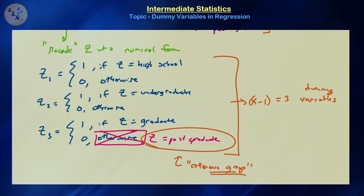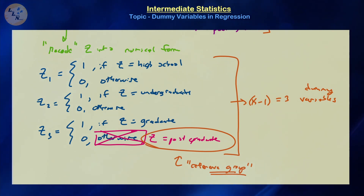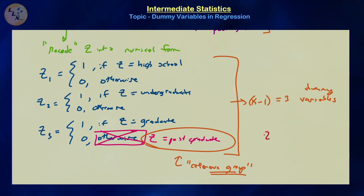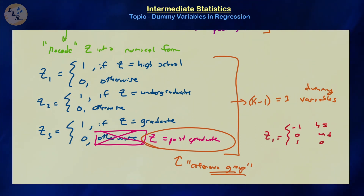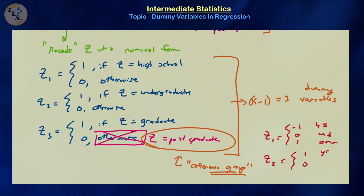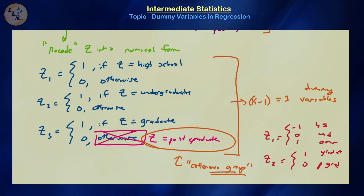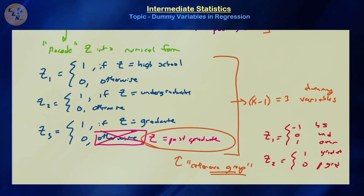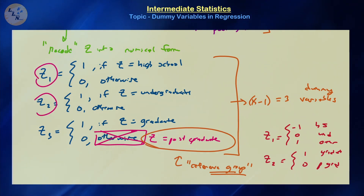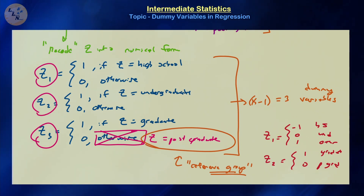This is not the only way to code these variables. For example, you could assign z2 to high school, z3 to undergraduate, or use values like negative one, zero, and one. But typically we want these variables to be as distinct and separate as possible so everything is accounted for. The ideal case is: if you have four values for a category, you will have k minus one different dummy variables associated with that category.